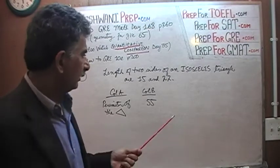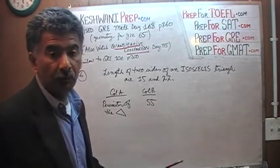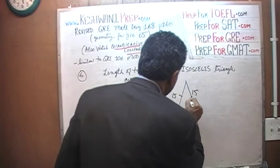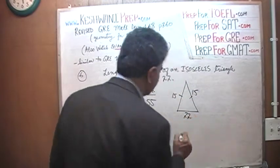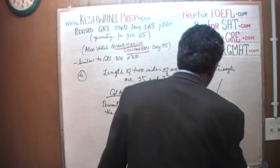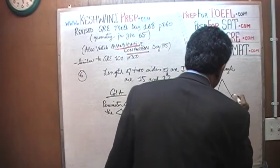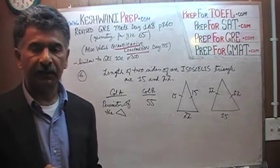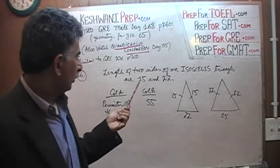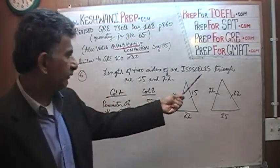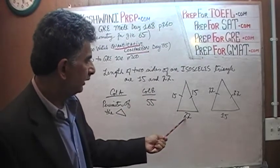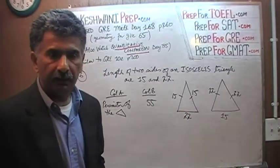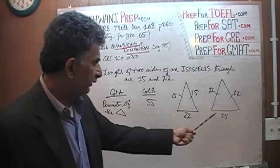There are only two possibilities. Either we have two 22s or we have two 15s. The first possibility: this side is 15, this side is 15, they are equal to each other, and the bottom is 22. The second possibility: 15 is at the bottom, and this side is 22, which is the same as the other side. Both of these possibilities can take place. All we know is that the length of the two sides of an isosceles triangle are 15 and 22.